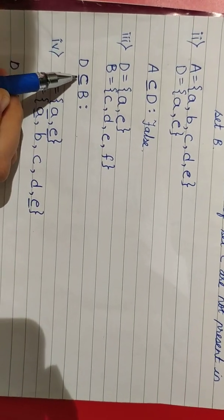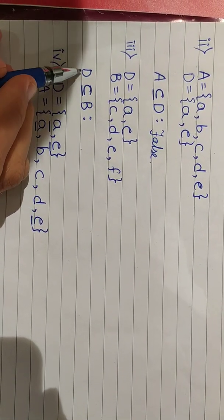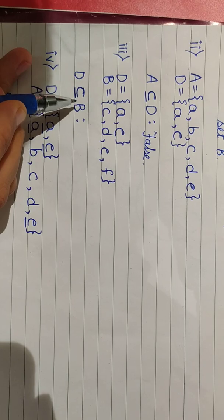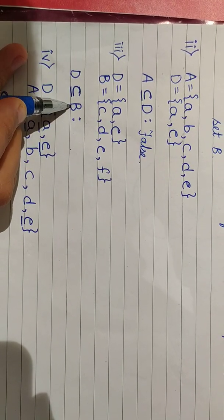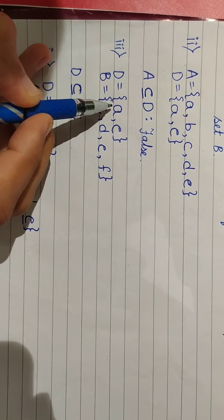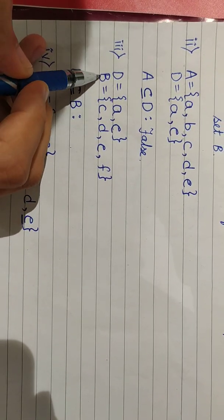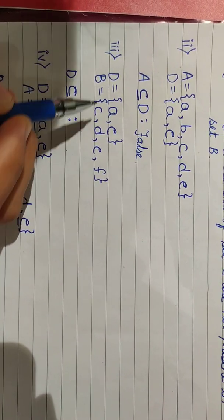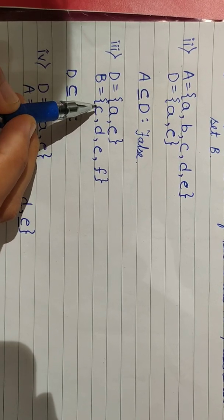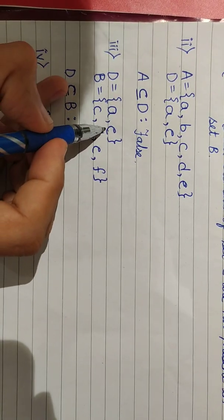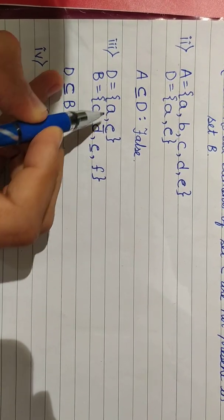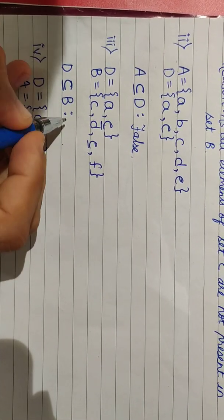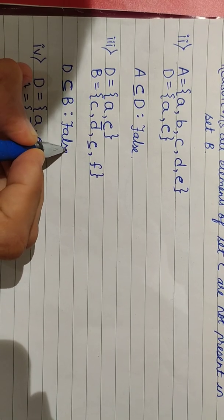Is D subset of B? To prove D is a subset of B, all the elements of set D should be present in set B. D = {A, E} and set B = {C, D, E, F}. Are all elements of set D part of set B? E is present in both sets, but A is not there in set B. Therefore, the statement D ⊆ B is false.